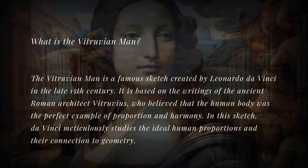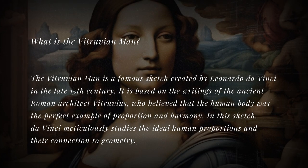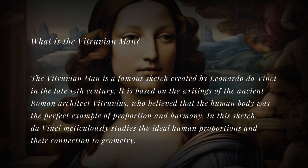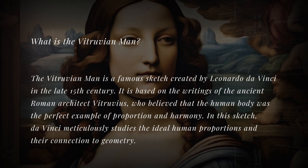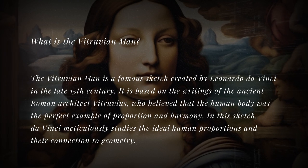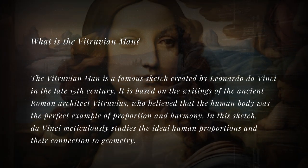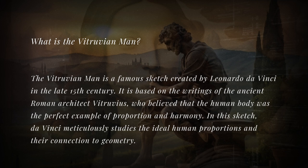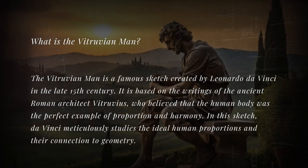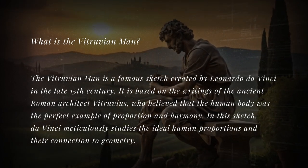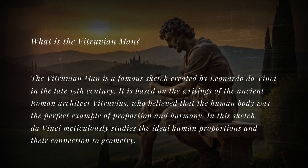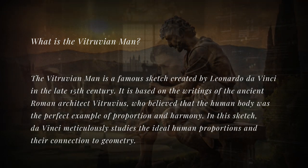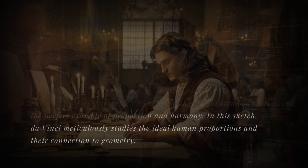What is the Vitruvian Man? The Vitruvian Man is a famous sketch created by Leonardo da Vinci in the late 15th century. It is based on the writings of the ancient Roman architect Vitruvius, who believed that the human body was the perfect example of proportion and harmony. In this sketch, da Vinci meticulously studies the ideal human proportions and their connection to geometry.